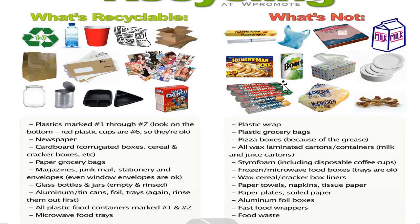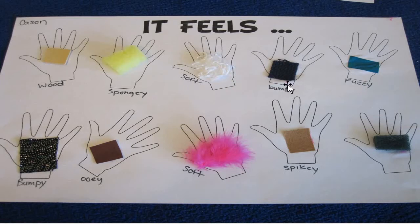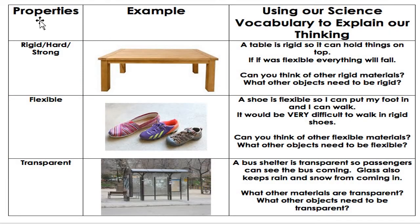Certain products are recyclable and certain products are not recyclable. All materials have a certain type of feeling when you touch them. If you touch wood you will feel its hardness, a sponge feels spongy, and if you feel wool or cotton you will feel softness — bumpy, fuzzy, or spiky. These sensations come under the properties of materials.